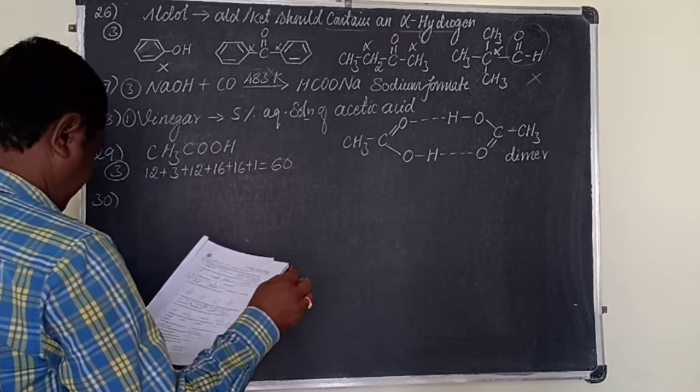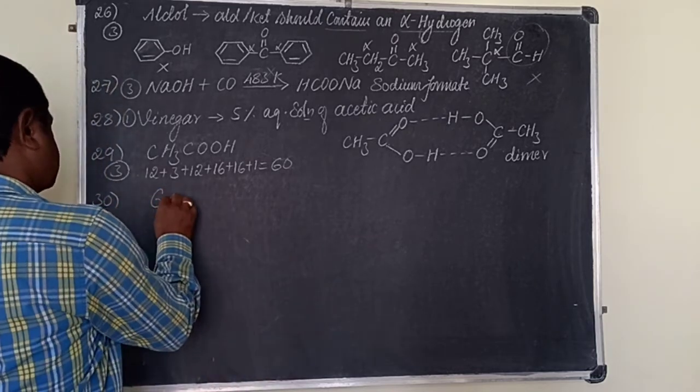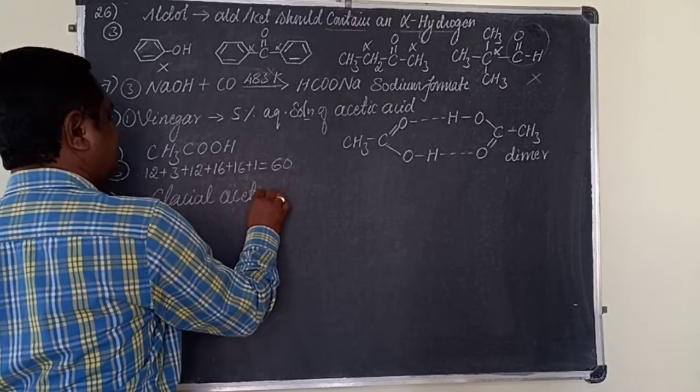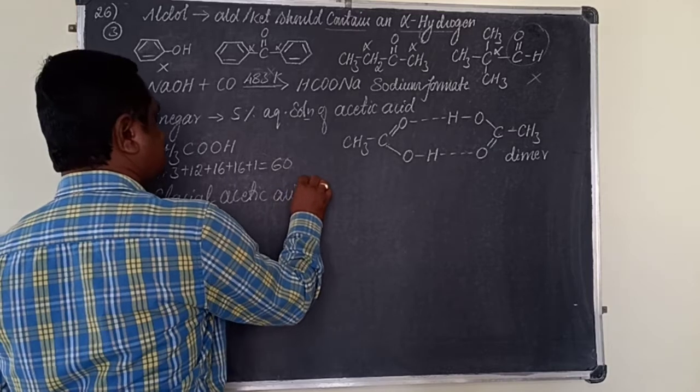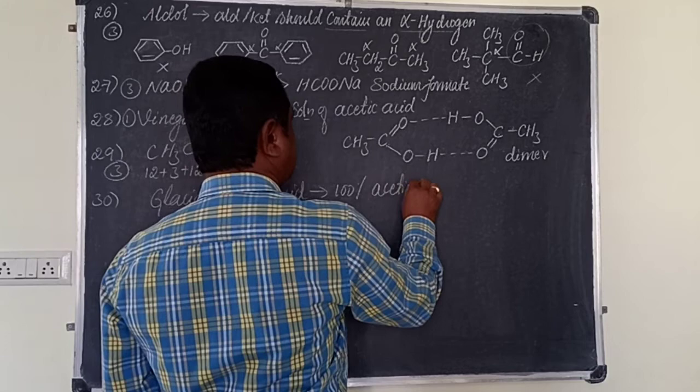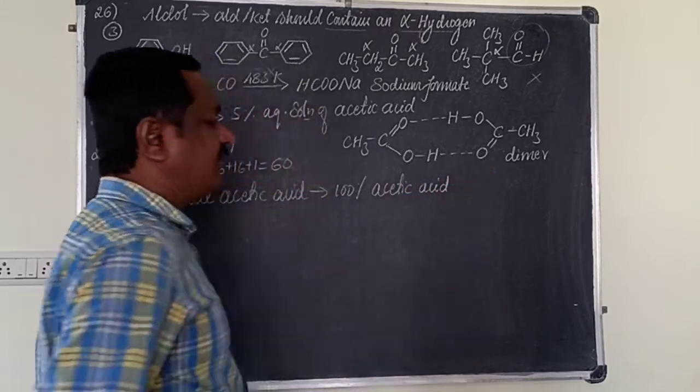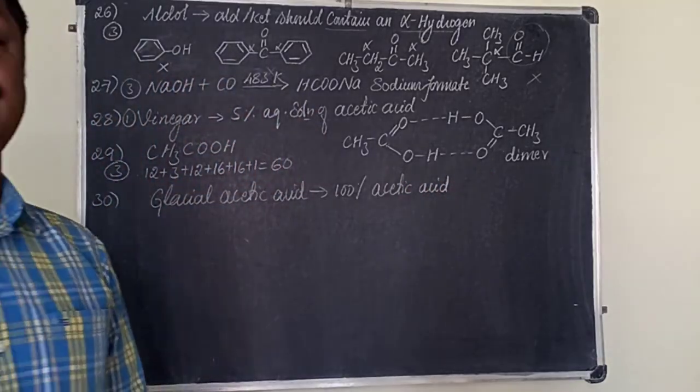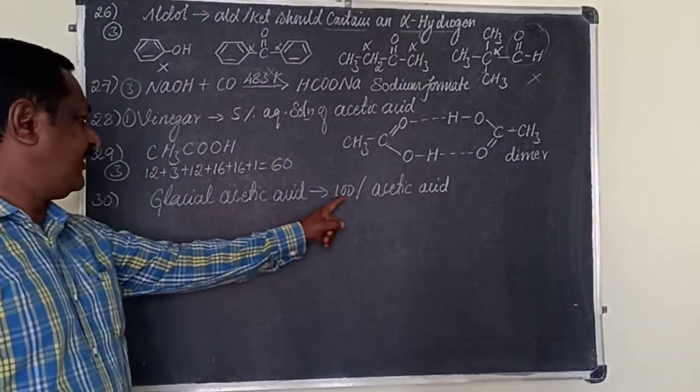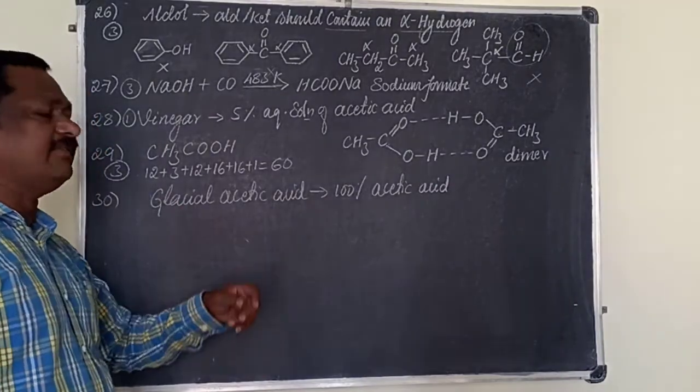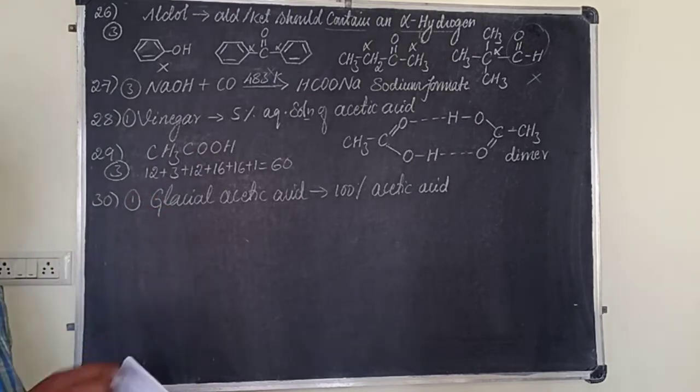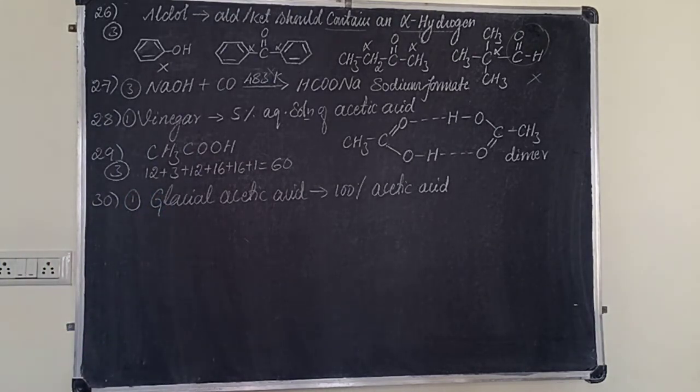Question 30. Glacial acetic acid. Glacial acetic acid is nothing but 100% acetic acid. It is called glacial acetic acid, like absolute alcohol is 100% ethanol. 100% acetic acid. Option 1.